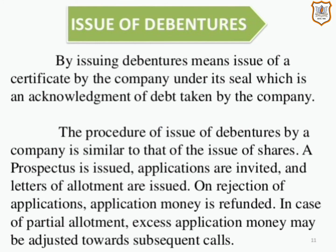Debentures are shown as long-term borrowings under the heading non-current liabilities on the equity and liabilities side in the balance sheet. Usually debentures are listed on the stock exchange after issue, and purchases or sales of debentures are traded at the stock exchange. The market value of such debentures could be more or less than the price of issue. If the terms so provide, debentures can be converted into shares. Debentures cannot be forfeited if any debenture holder does not pay any amount on debentures.